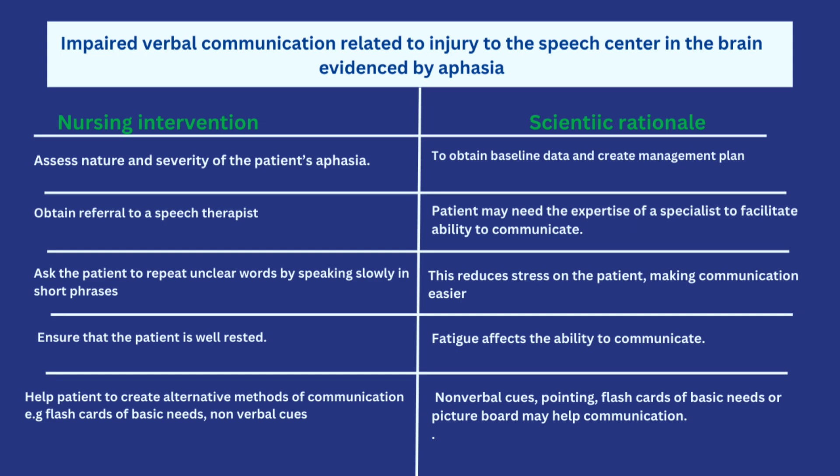The next thing is to ask the patient to repeat unclear words by speaking slowly in short phrases. The patient may be trying to make a lot of sentences quickly the way they did before the stroke episode, so encouraging shorter phrases and speaking slowly makes it easier to communicate. Then ensure the patient is always well rested and doesn't have a lot of people disturbing them, because fatigue affects their ability to communicate.